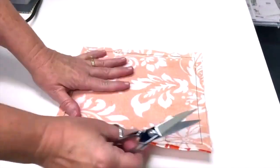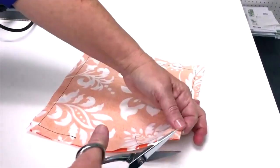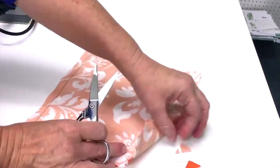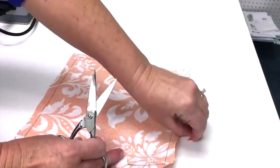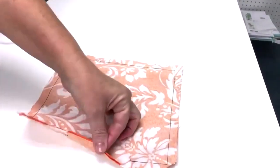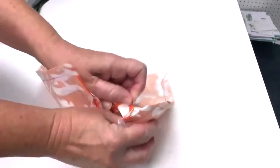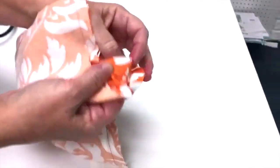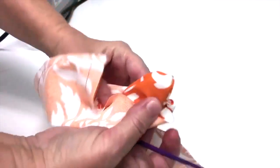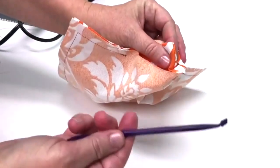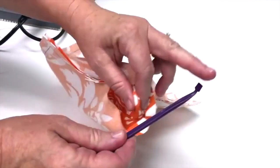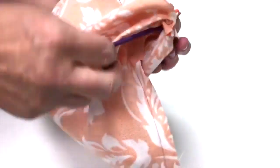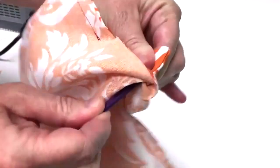First we're going to clip the corners on our pillow, and what that does is it gets the extra bulk out from the corner so that when you turn it you don't have as much bulk in that corner. What I like to use for corners is that purple thing. It's got this handy square at the top and you put that inside and then push the seam out.